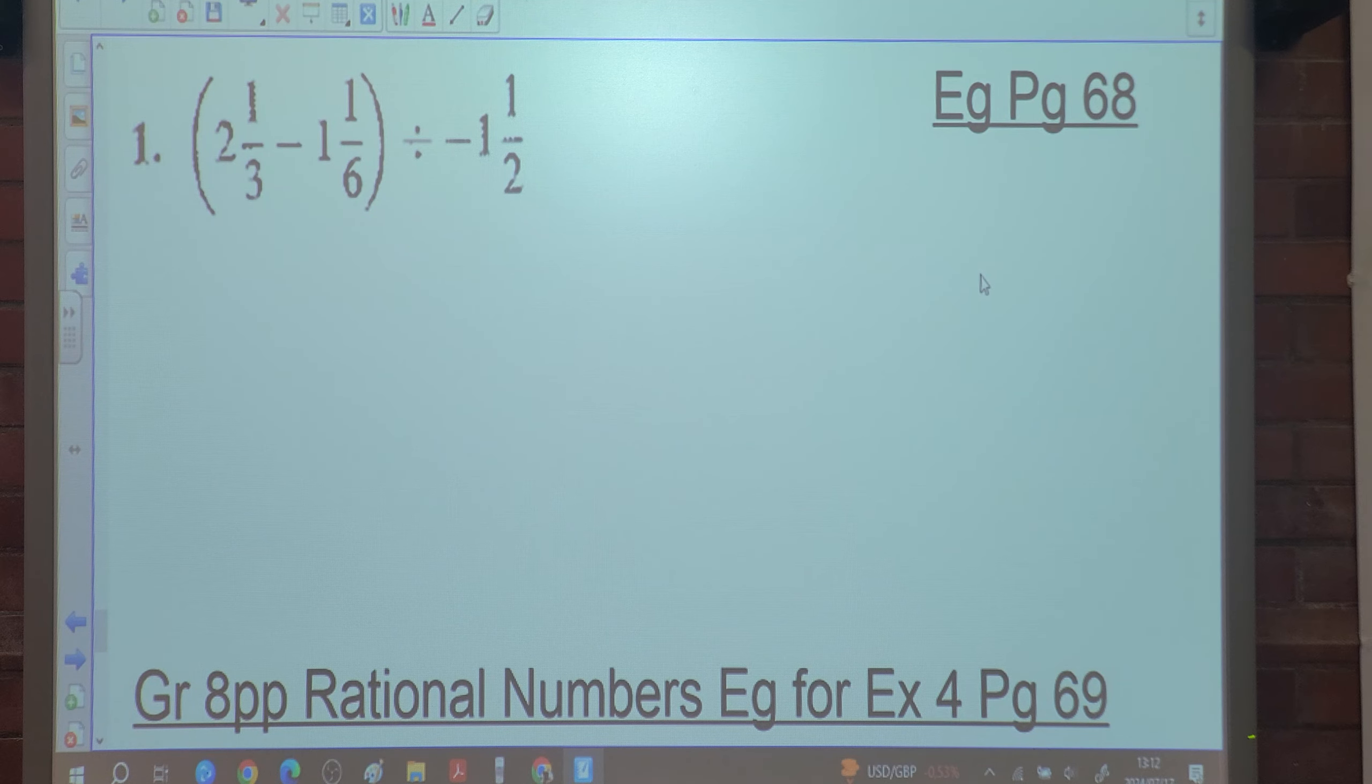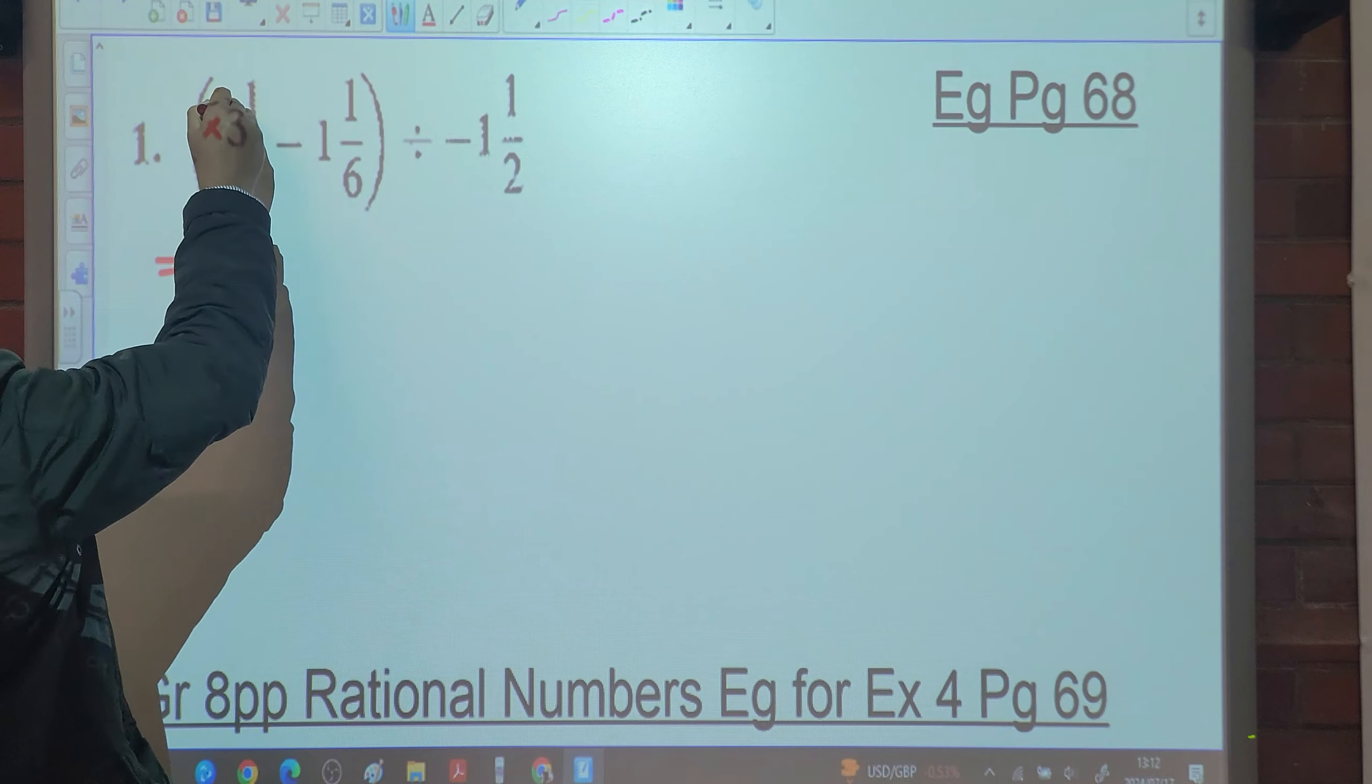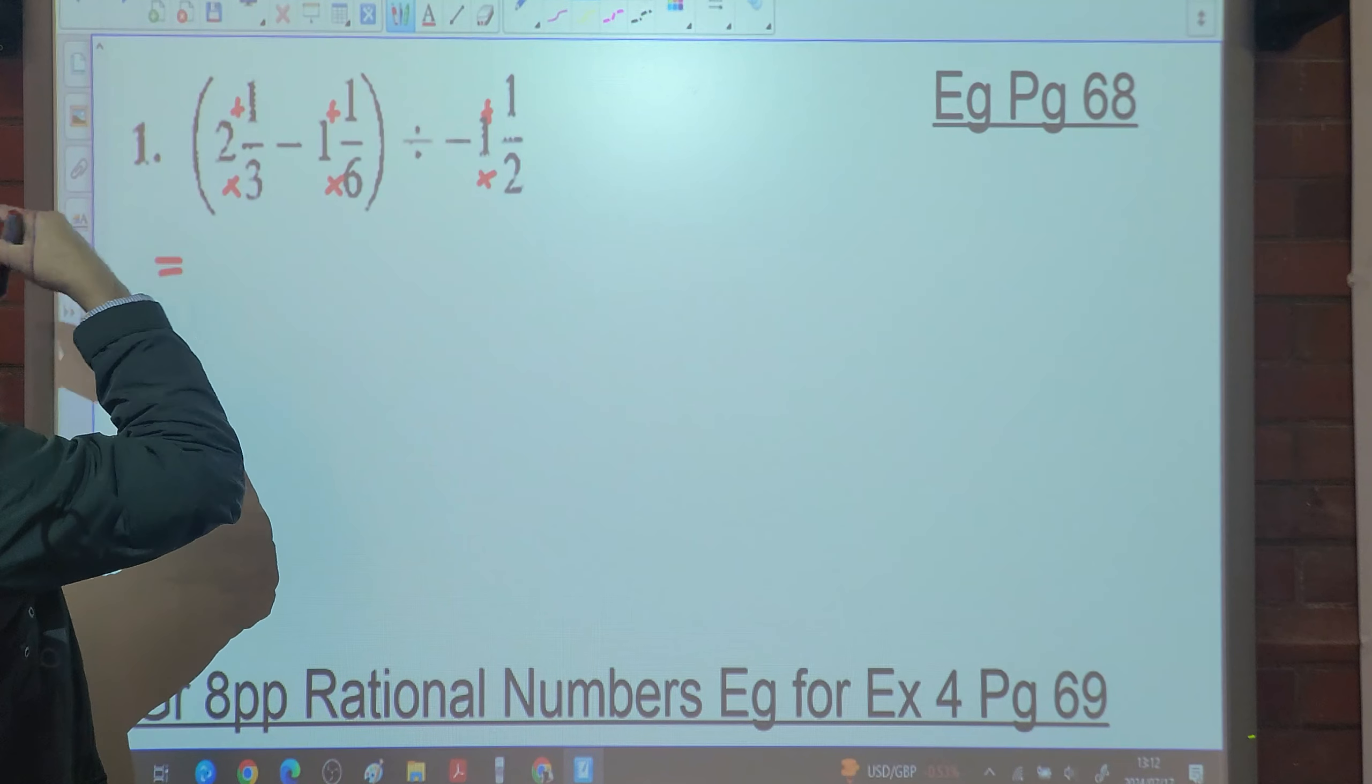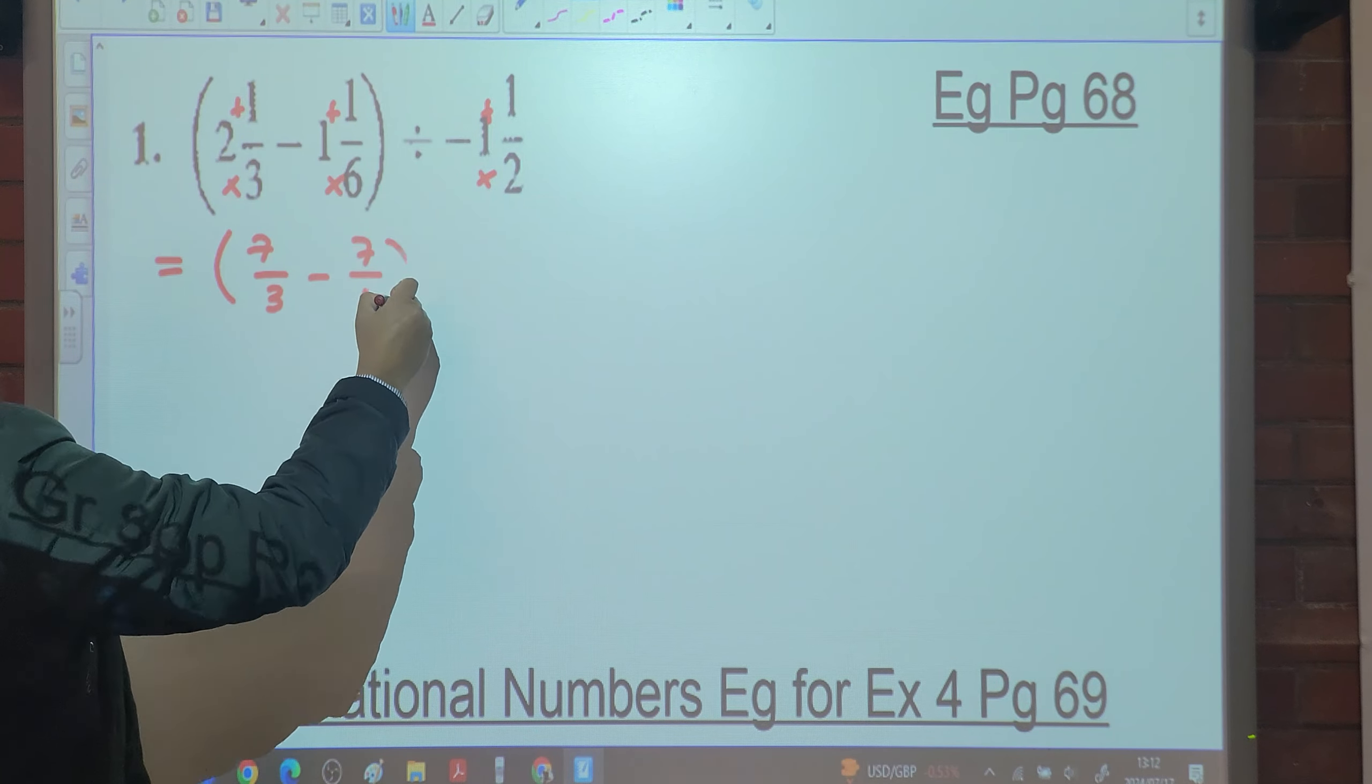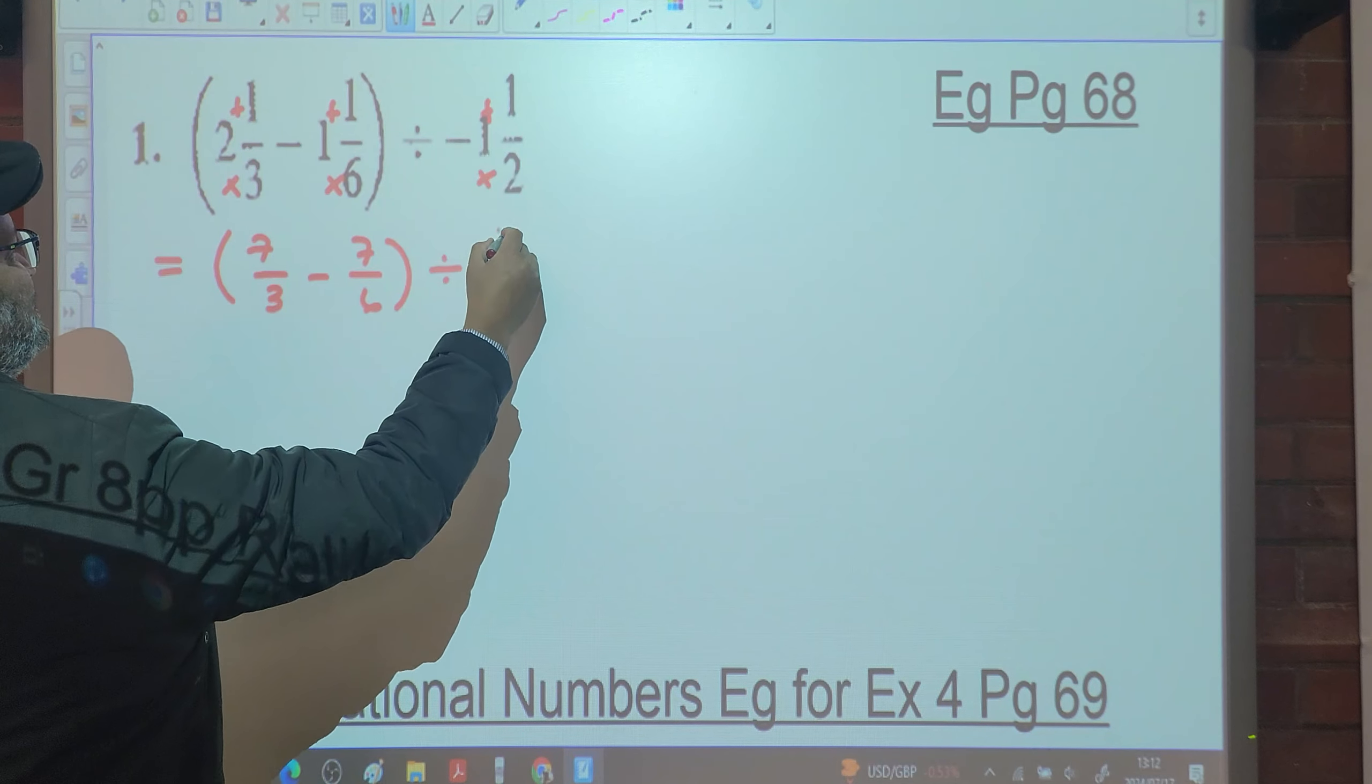But what's the first thing we do? Change everything to improper fractions. So three by two is six plus one is seven. Minus six times one, six plus one is seven over six, divided by two times one is two plus one is three.